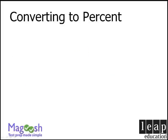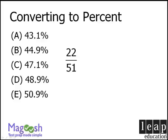Let's try another example. Let's convert this fraction to a percent. We want to rewrite this fraction as a new fraction with denominator 100. To do this, we must multiply 51 by approximately 2.